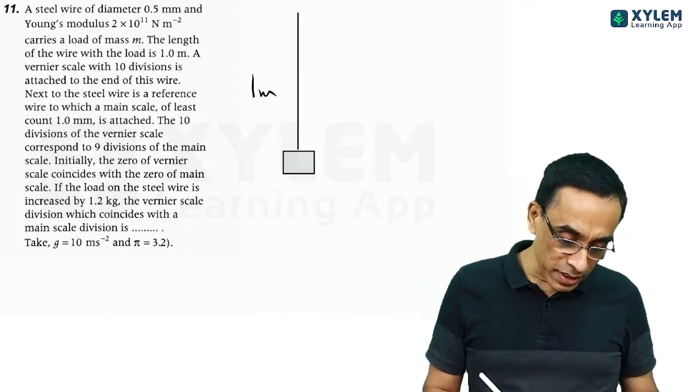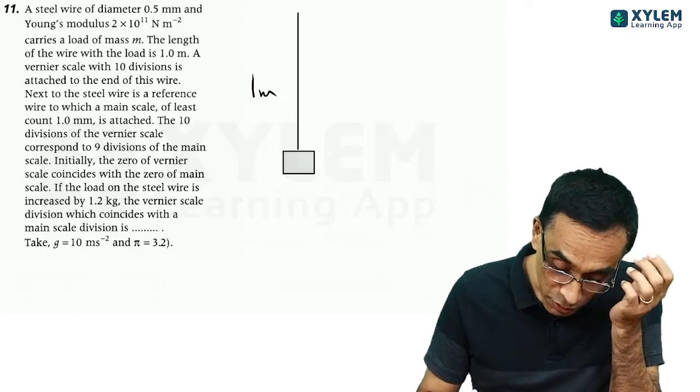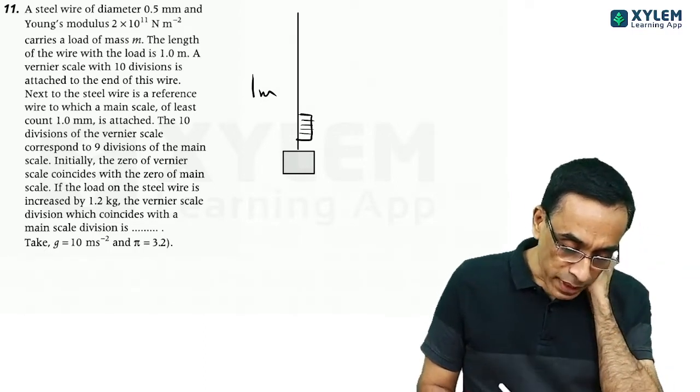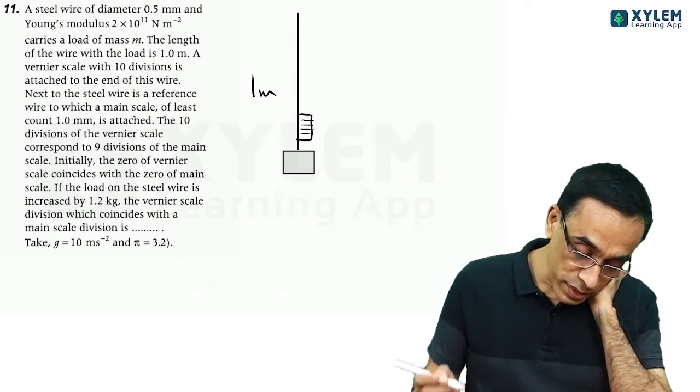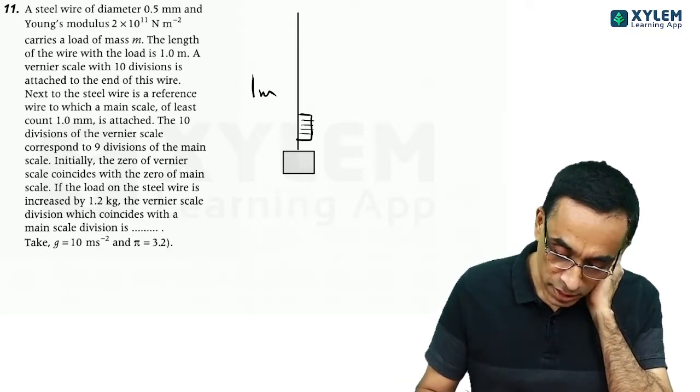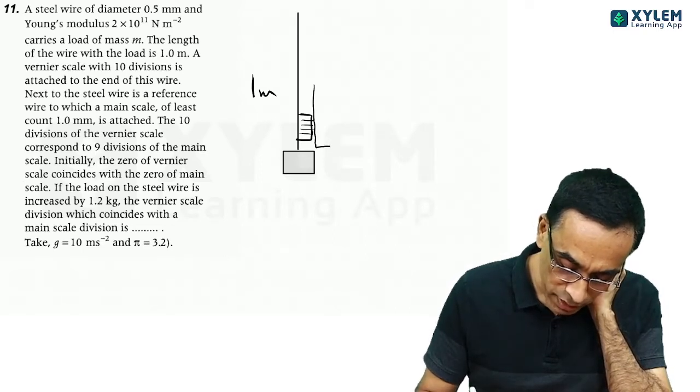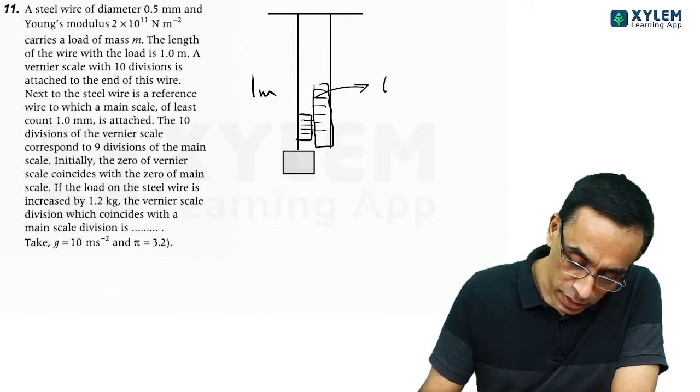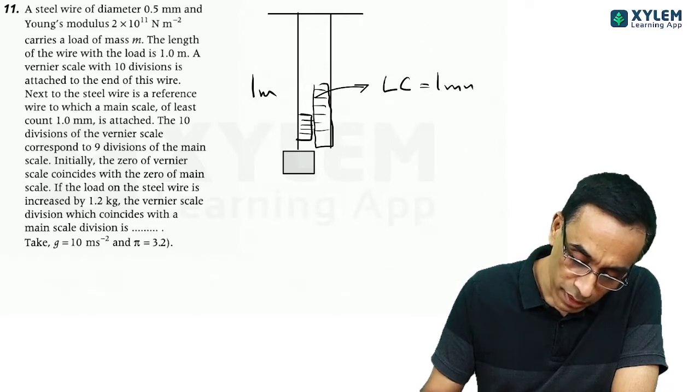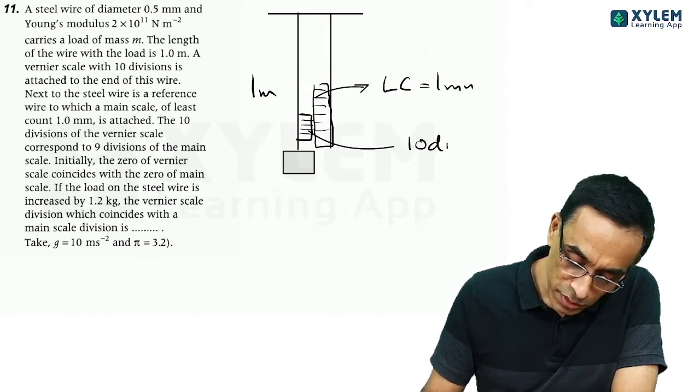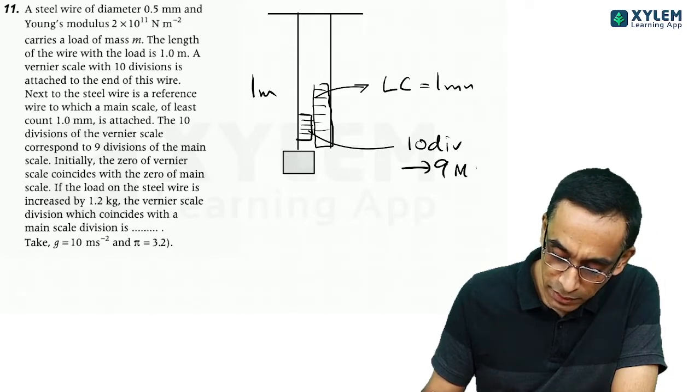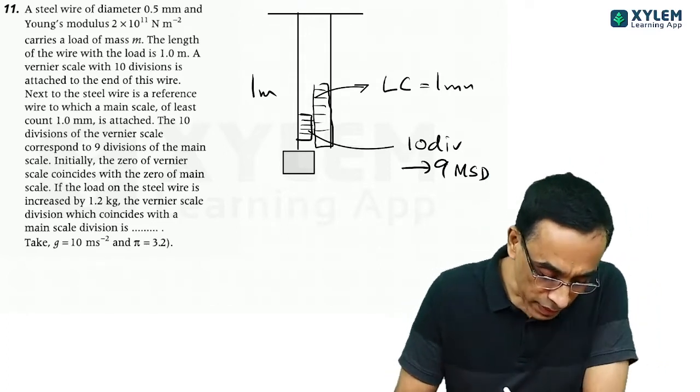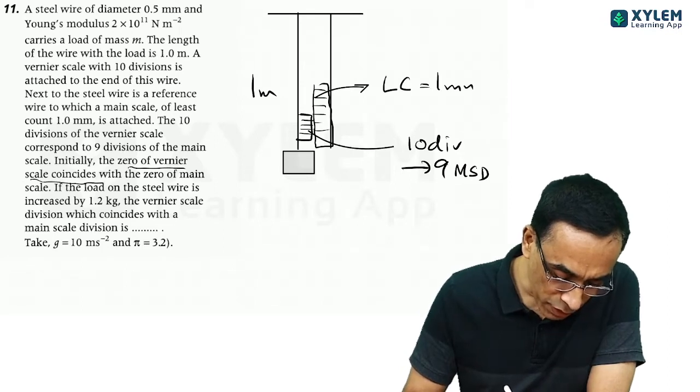A vernier scale with 10 divisions is attached to the end of this wire. Next to the steel wire is the reference wire to which a main scale of least count 1 millimeter is attached. This is the third wire with the main scale connected. It is the reference wire supported, and this is the main scale with least count 1 millimeter. The vernier has 10 divisions on it.